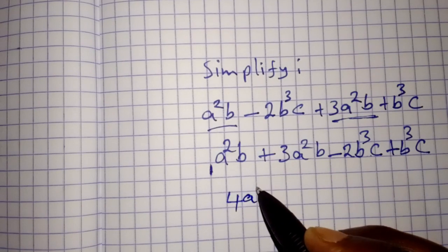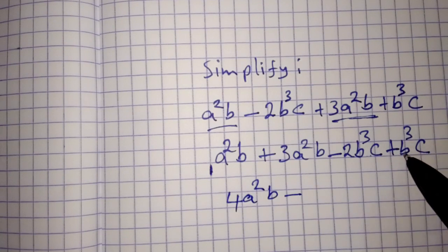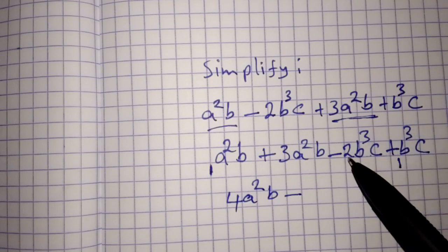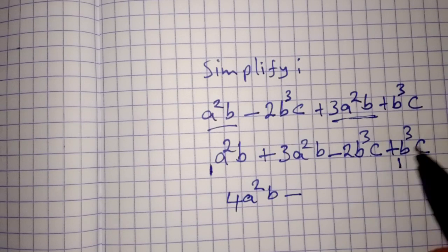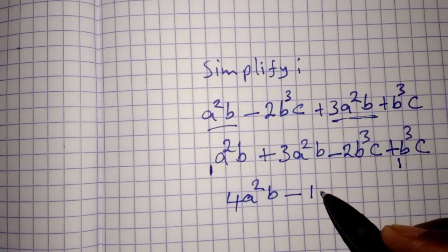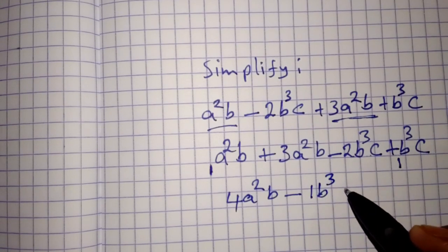4a²b. Minus b³c is just like 1b³c. Minus 2 plus 1 is minus 1. Minus 1b³c.